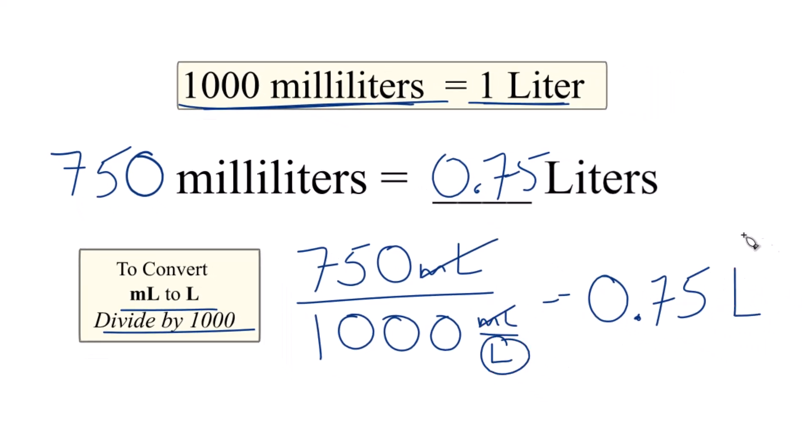So again, 750 milliliters is 0.75 liters. This is Dr. B, thanks for watching.